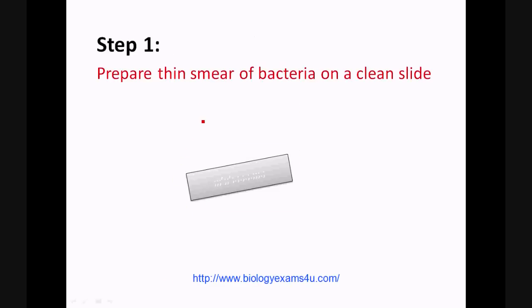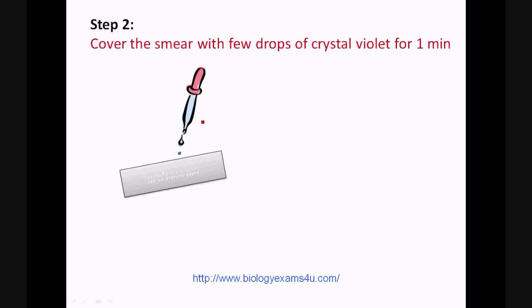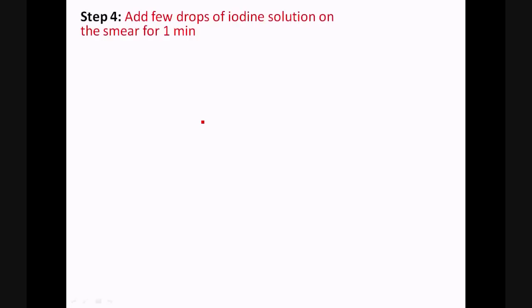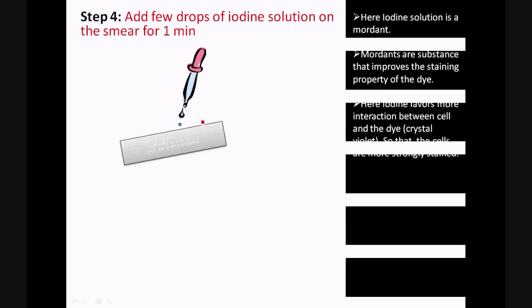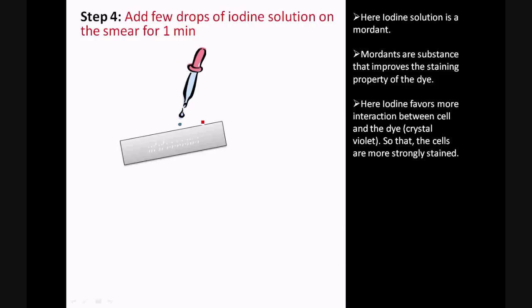Now moving into the procedure: prepare a thin smear of bacteria on a glass slide. Cover the smear with a few drops of crystal violet to stain the bacteria. Wash excess stain with a gentle stream of water. Then add a few drops of iodine solution. The iodine here acts as a mordant — a mordant is any substance that improves the staining by increasing the binding of crystal violet with the peptidoglycan of the cell wall.